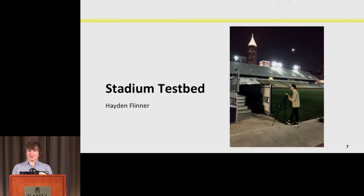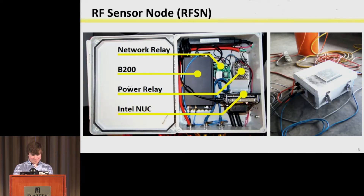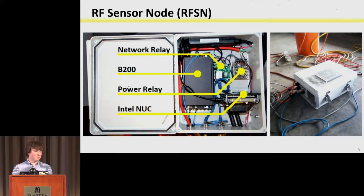First I'm going to go over the stadium test bed. That's a picture of an empty stadium — we were there taking measurements to figure out exactly where all our nodes are so we can do some better math. The box we've deployed is basically just a B200 and all the hardware necessary to run it in a weatherproof box, since these are in and around the stadium. One of them is on top of a concession stand — you can only get to it with a ladder. That's why we have the network relay and the power relay so we can do pretty much everything remotely.